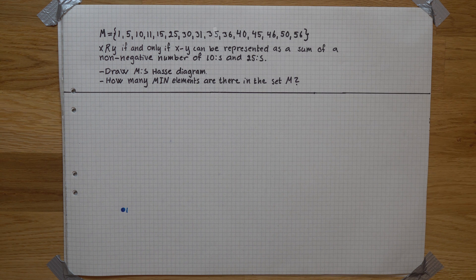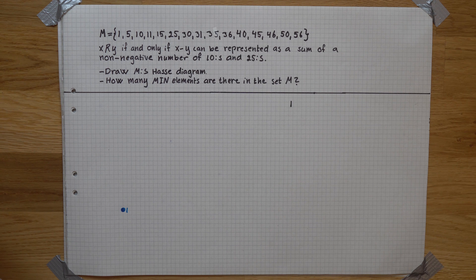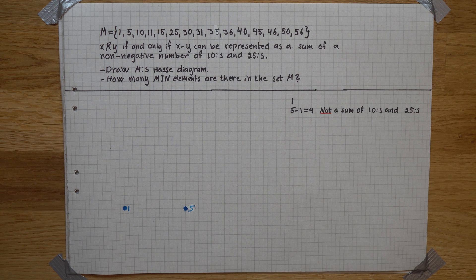Start with the first element of the set. Look at the next element, 5, and see if it meets the conditions. Since 5 minus 1 is not a sum of 10s and 25s, 5 goes at the bottom.